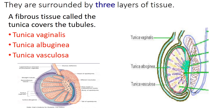The testes are surrounded by three layers of fibrous tissue called the tunica. The first layer is the tunica vaginalis — the outermost double layer. The second is the tunica albuginea. The third, innermost layer is the tunica vasculosa, which consists of blood vessels and connective tissue. The tunica vaginalis contains fluid that reduces friction between the testes and scrotum.